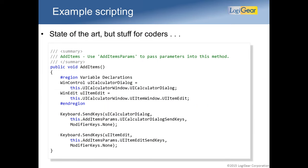When you look at an automated test written in Coded UI — which is a very advanced Microsoft automation standard — you immediately know: what am I testing here? It is difficult to understand, especially if you are not fluent in C#. That means you rule out the whole category of domain experts and non-technical people from your process.